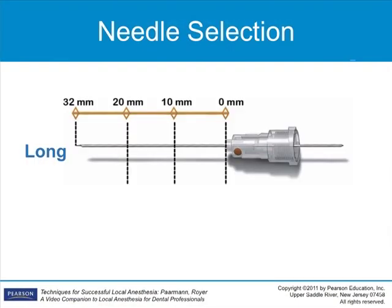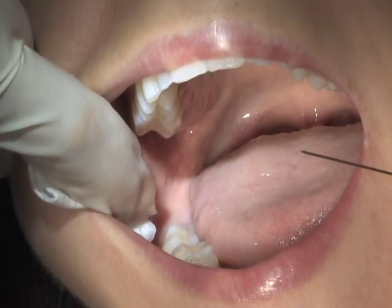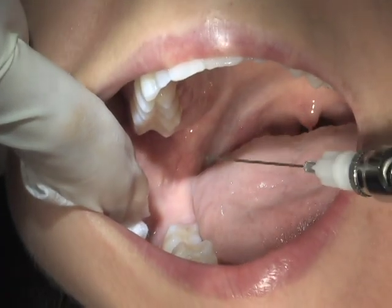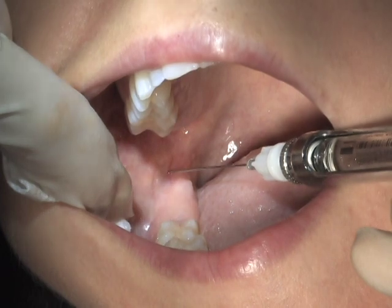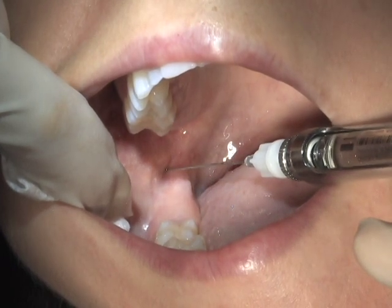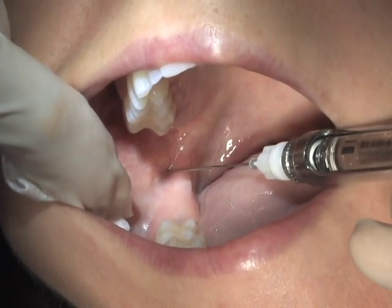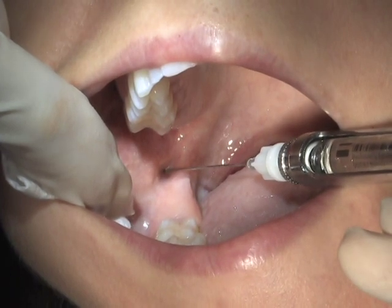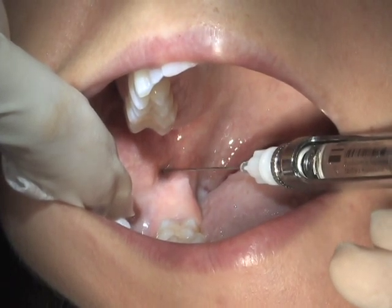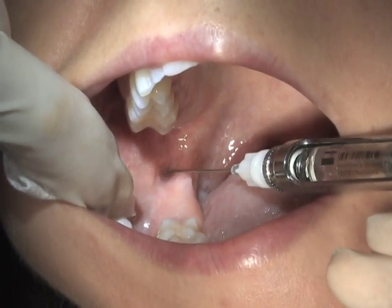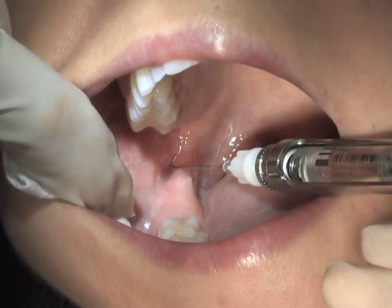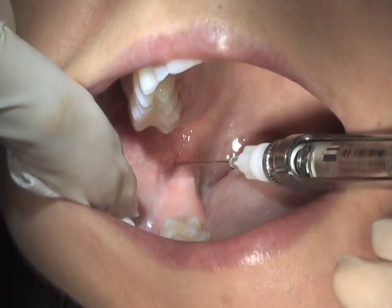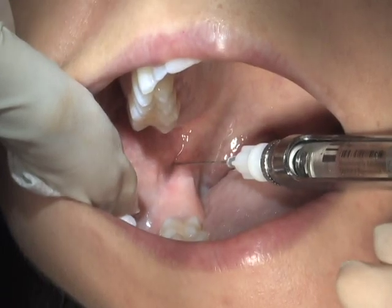Use a 25 or 27 gauge long needle. The penetration site for this injection is medial to the internal oblique ridge, lateral to the pterygomandibular raphae, at the height of the coronoid notch — approximately 2 to 3 millimeters superior to the greatest concavity of the coronoid notch, or approximately 10 millimeters above the occlusal plane.